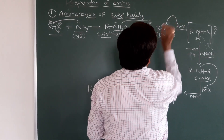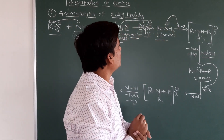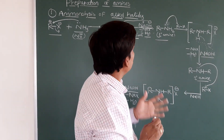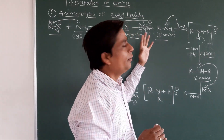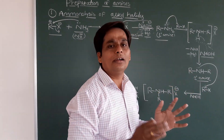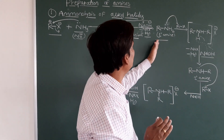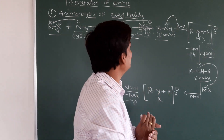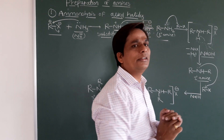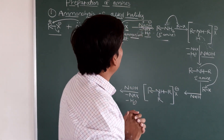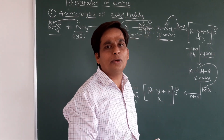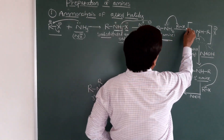R–NH2 is the primary amine. It has a lone pair of electrons, so this primary amine acts as a nucleophile. When treated again with alkyl or aryl halides, we can get secondary or tertiary amines.